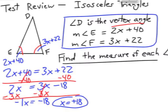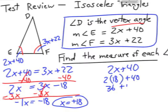Now we need to plug that in and figure out what the actual value of the angles are. So 2x plus 40 is really 2 times 18 plus 40. 36 plus 40 equals 76 degrees. One base angle has to be 76 degrees. The other base angle has to be 76 degrees.